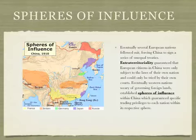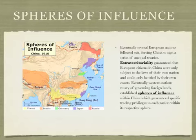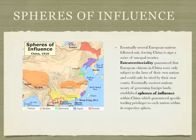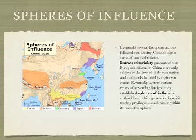We started taking a look at spheres of influence when we were discussing the scramble for Africa — this is also a concept we'll be looking at in China. Eventually several European nations followed suit and forced China to sign a series of unequal treaties. Extraterritoriality guaranteed that European citizens in China were only subject to the laws of their own nation and could only be tried by their own courts. Eventually Western nations established spheres of influence within China, which guaranteed specific trading rights and privileges to each nation within its respective sphere.